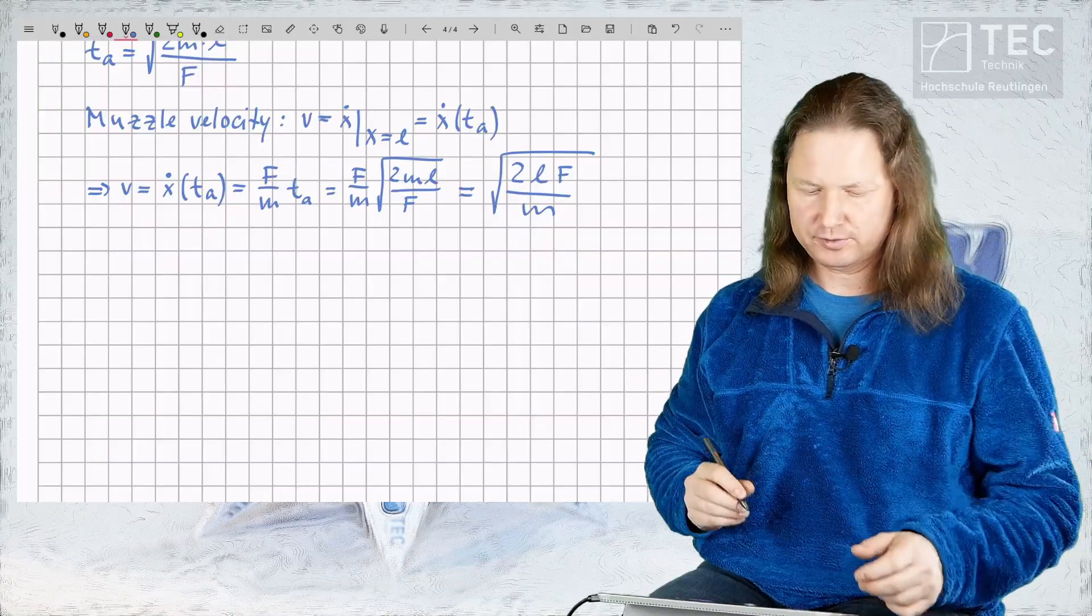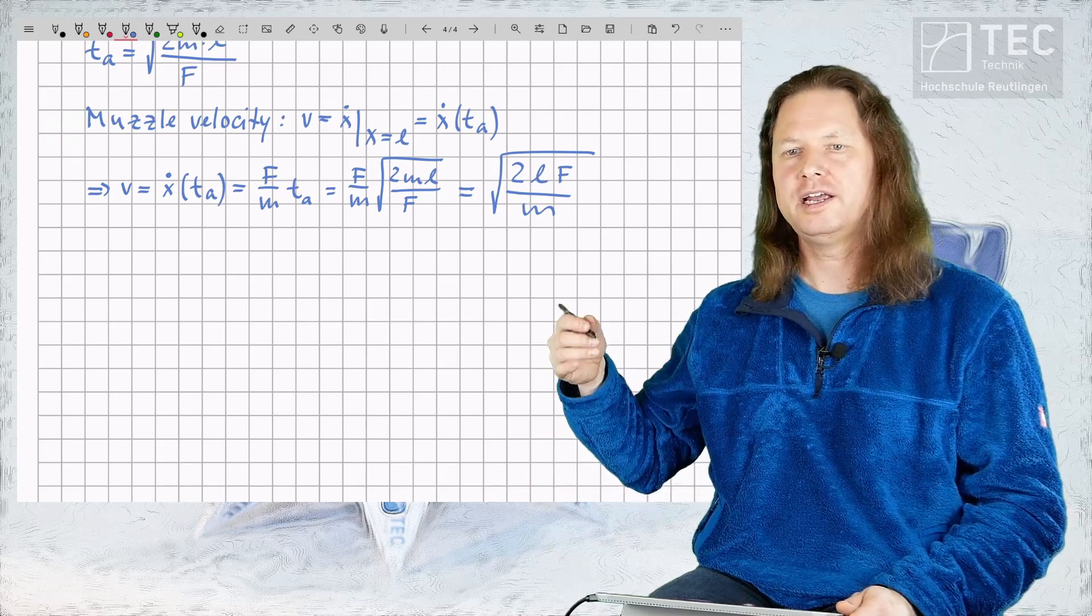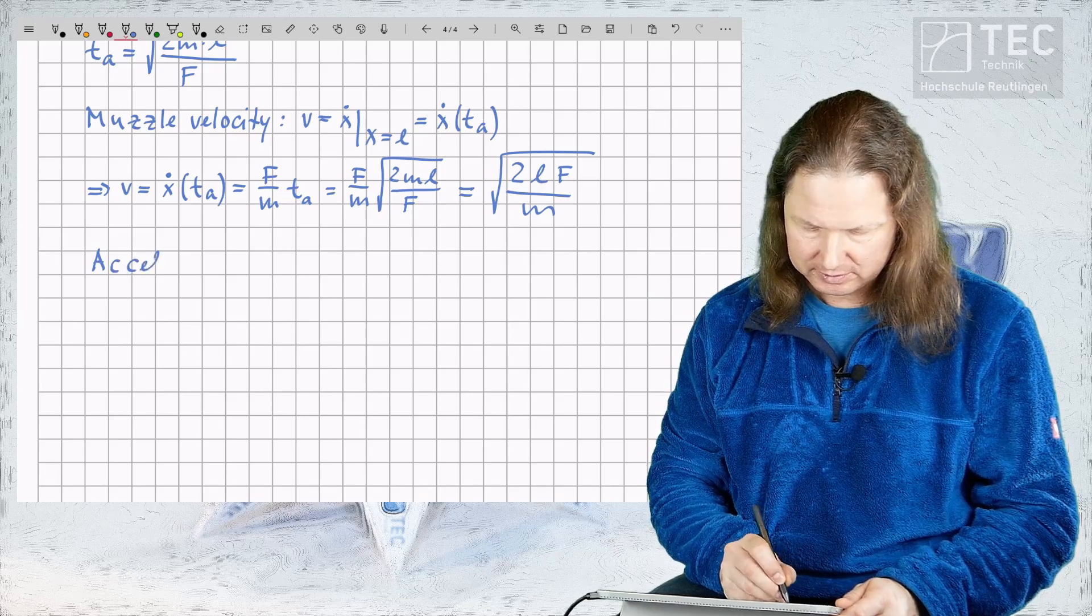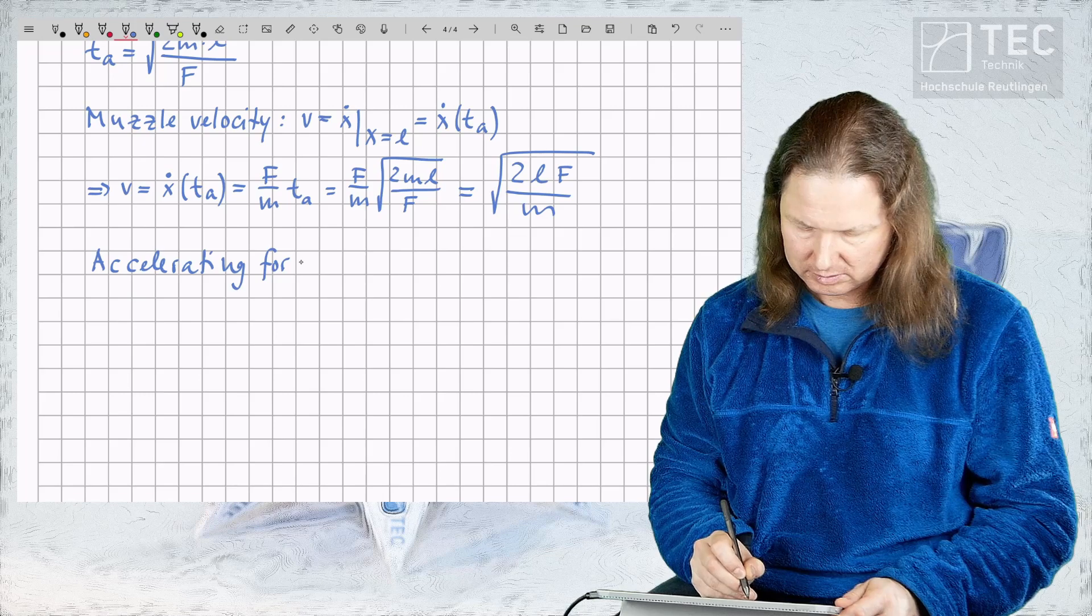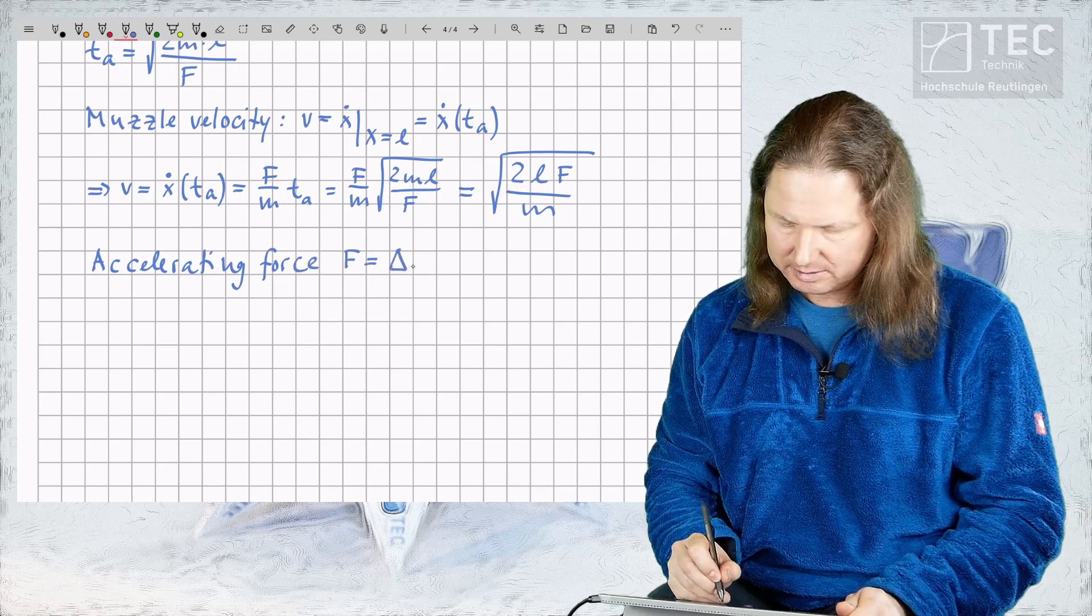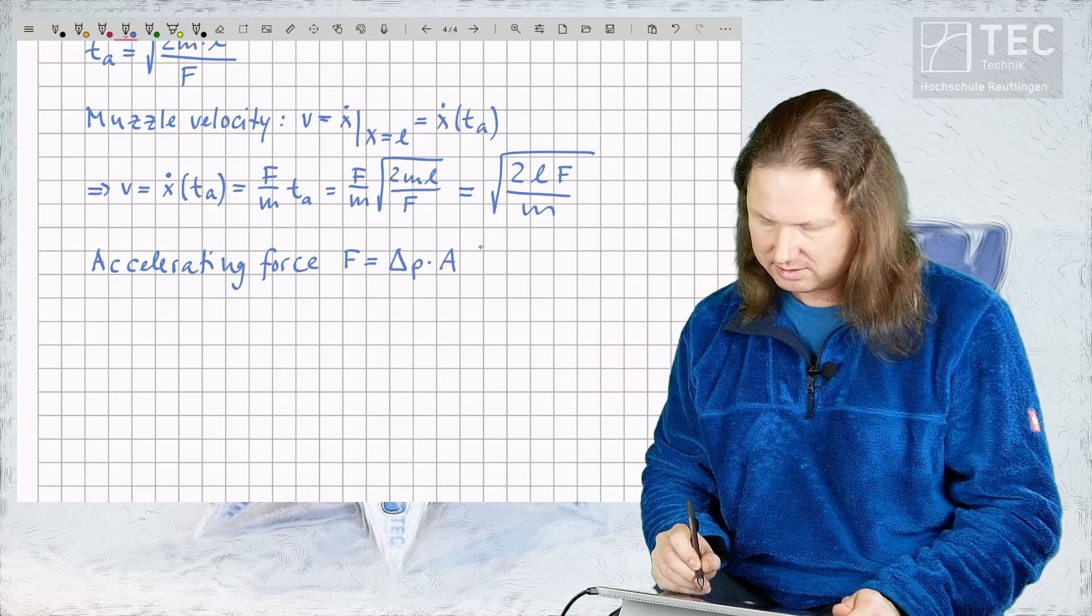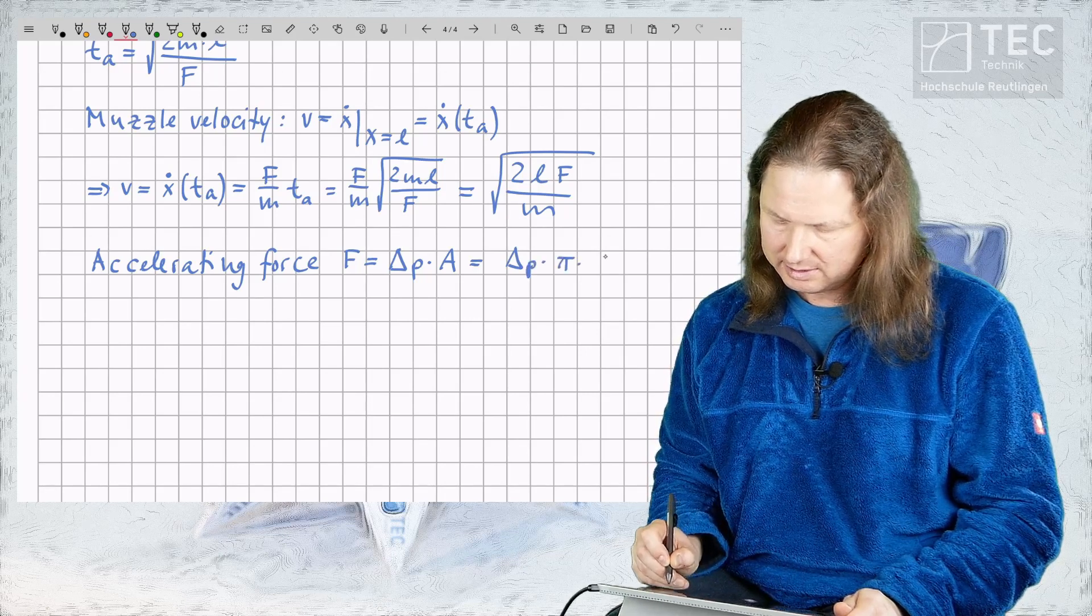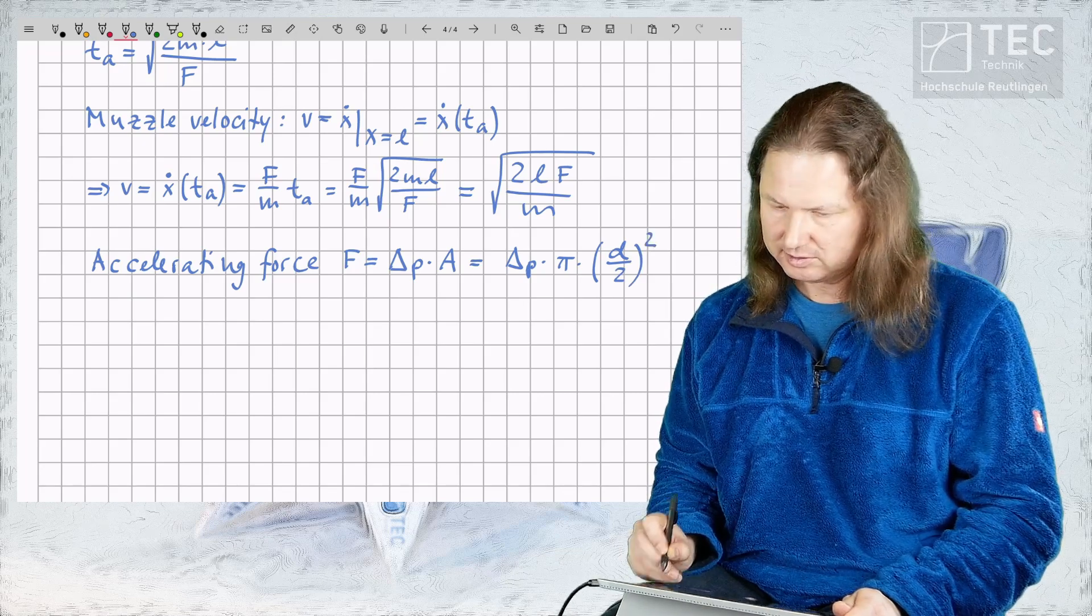The accelerating force F is given by the product of the differential pressure and the area onto which the pressure is applied. So we have accelerating force F is equal to delta P times the cross-sectional area of the dart which is delta P times pi times the diameter of the dart divided by 2 squared.